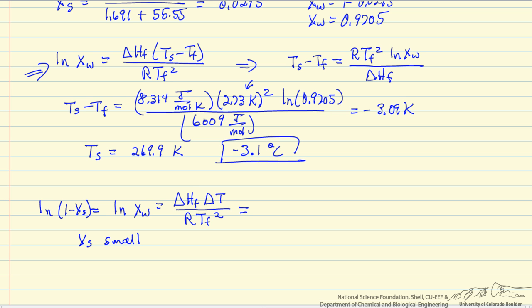Now it turns out when x is small, this left side of the equation is essentially minus x of the solute, just a mathematical relation. And so this is often the format where, of course, delta T is just T for the solution minus T of the pure material.